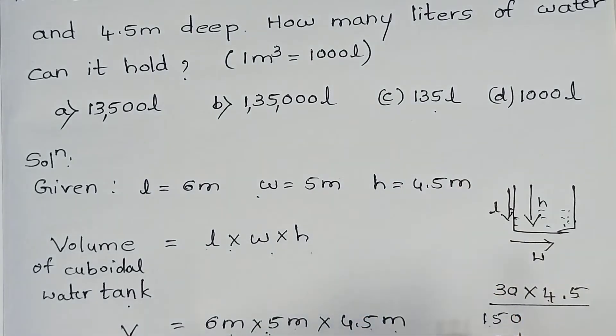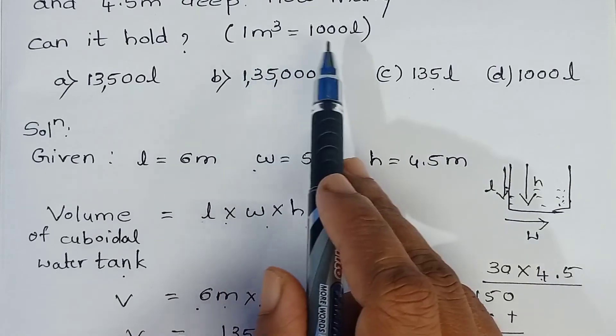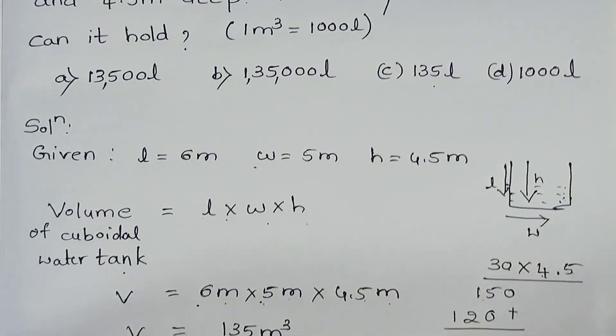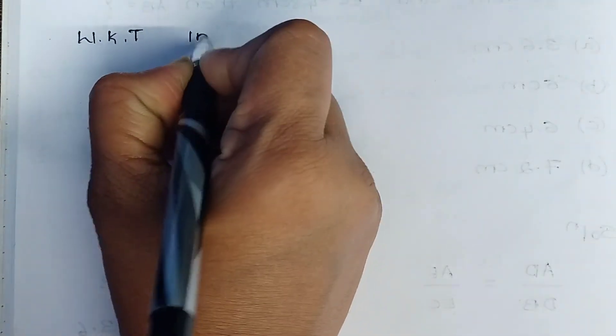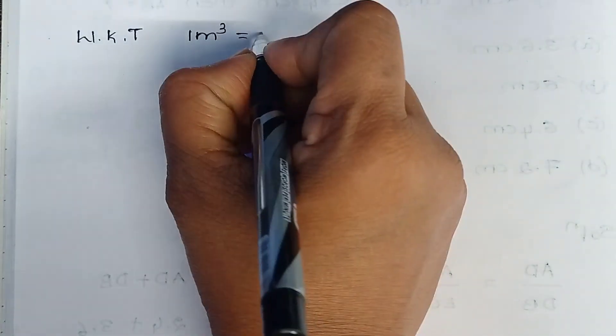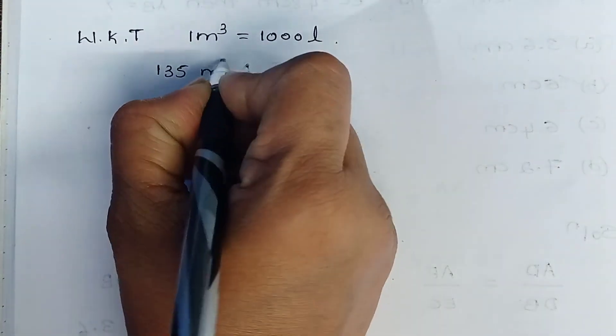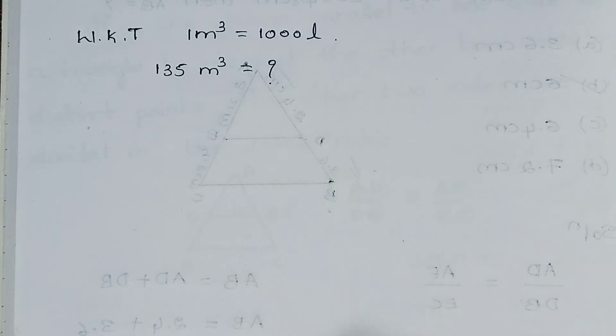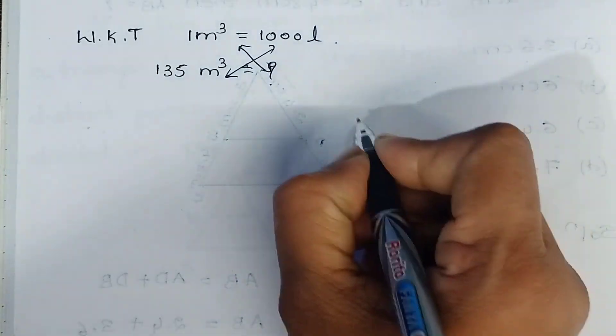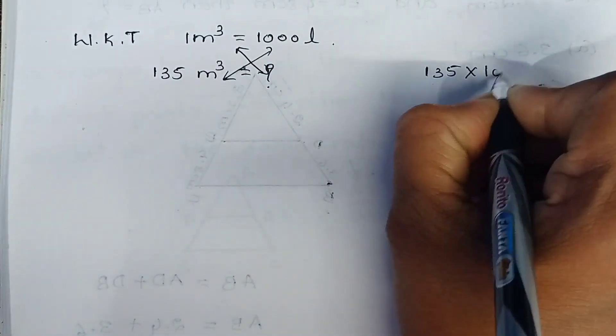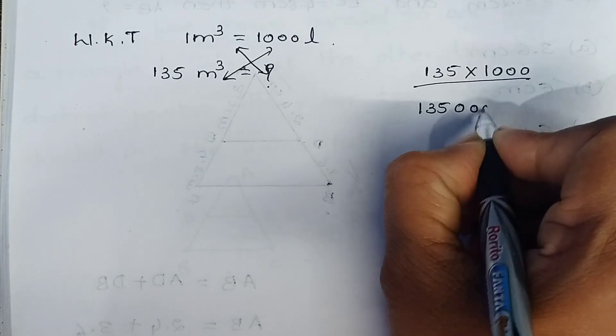So, we have to find out the volume in liter. And they have given in the hint, 1 meter cube is equal to 1000 liter. So, let's do this. We know that 1 meter cube is equal to 1000 liter. Then, 135 meter cube is equal to how much liters? We have to cross-multiply. That is 135 into 1000. It will become 135 and 3 zeros.